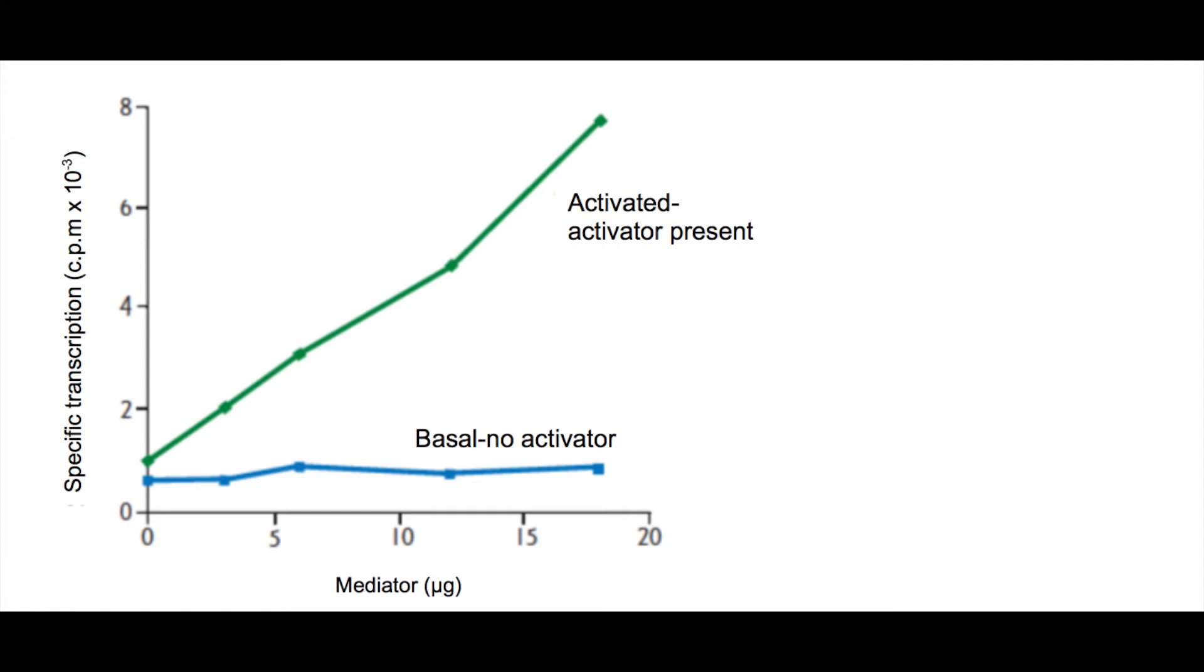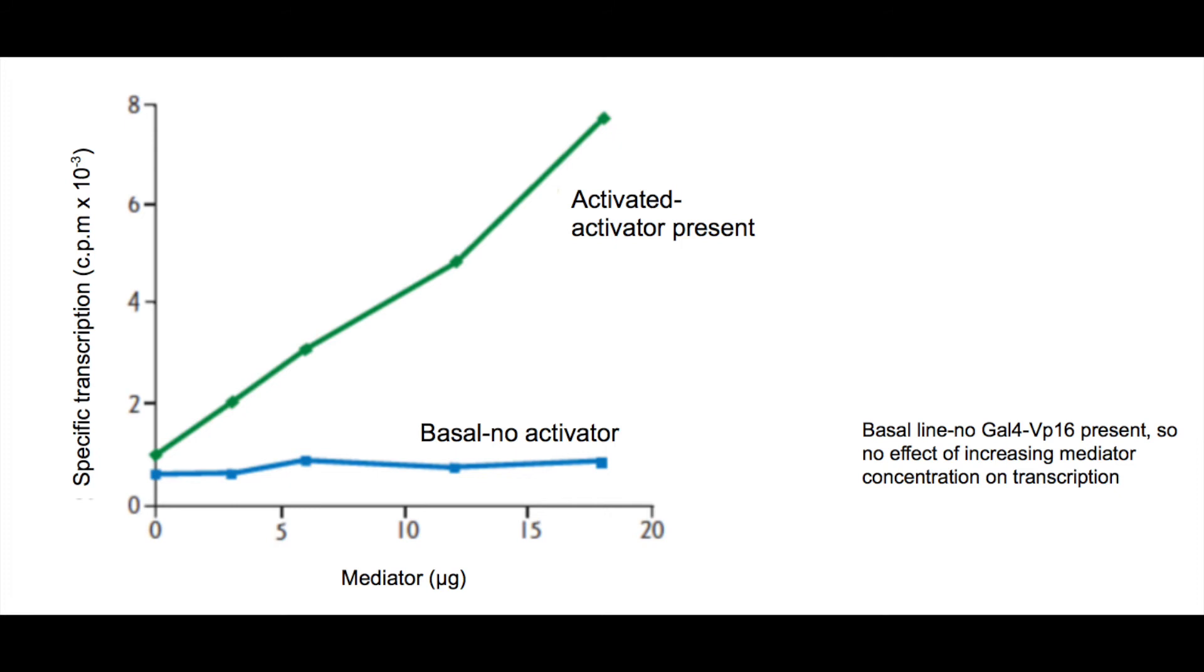This graph correlates to a replicate experiment and is another way to represent the amount of transcription that occurred with activator and without activator. The band's radioactivity was quantified, and the points on the lines indicate how much transcription occurred. The x-axis is the concentration of mediator added, and the y-axis represents the amount of transcription. You can see that when no activator is present, there is a constant amount of transcription as the concentration of mediator increases. This line is blue and is labeled basal on the graph. This shows that while transcription can occur at a low level without activators added, the mediator does not affect transcription when no activators are present.